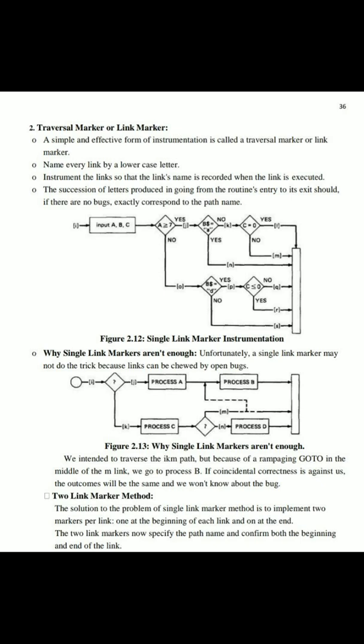Next, input a, b, c — after this process, a decision 'a greater than or equal to 7'. The path name is formed by the sequence of lowercase link letters traversed. If there is no bug, exactly corresponding to the path name — if there's no bug, you get the path character. This makes it easy using lowercase letters as link names.